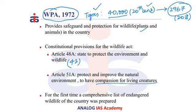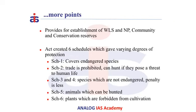For the first time after the creation of this act, a comprehensive list of endangered wildlife — both plants and animals — was prepared in the country. The act provides for the establishment of national parks, wildlife sanctuaries, and community and conservation reserves. It also created six schedules giving varying degrees of protection to wildlife.